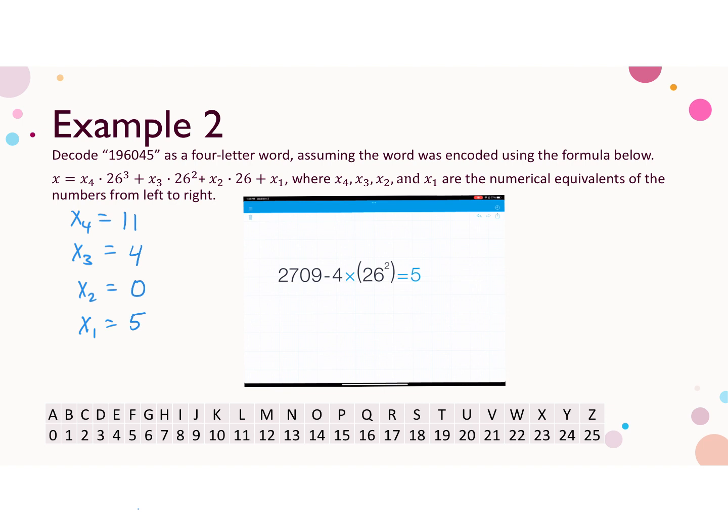Last thing we're going to do is look up those letter codes. Next, 11 is L, 4 is E, 0 is A, and 5 is F, so our code word here is LEAF.